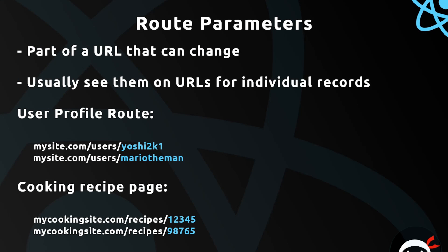In this video I want to talk about route parameters. They are a part of a URL that can change. We usually see them on URLs for individual records such as profile routes — for example, mysite.com/users/ and then whatever the username is, like yoshi2k1 or mario_the_man. The rest of the URL stays the same but these bits on the end change to show different data for each individual user. They both still show a user profile page — the template is the same.